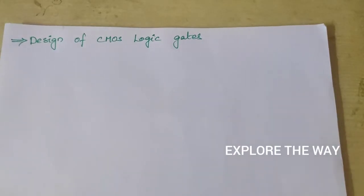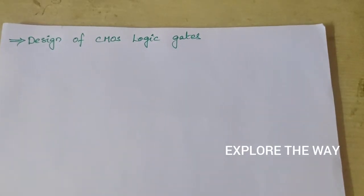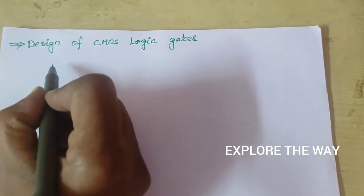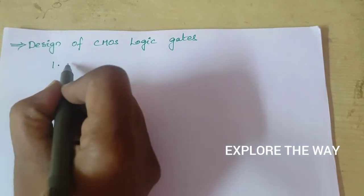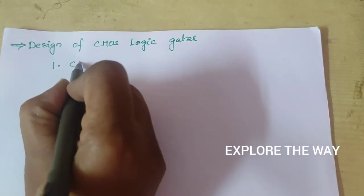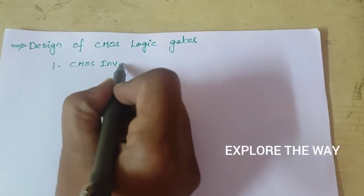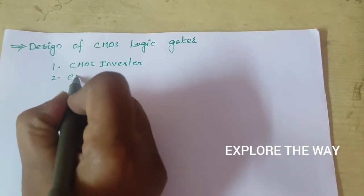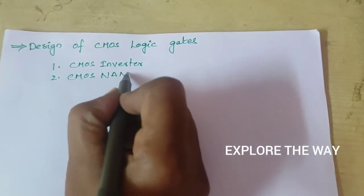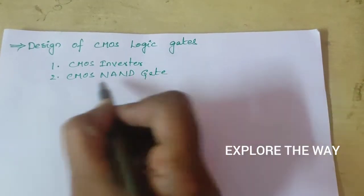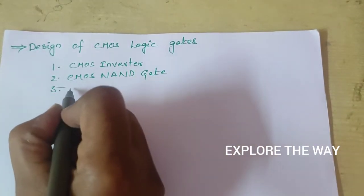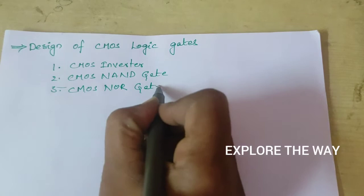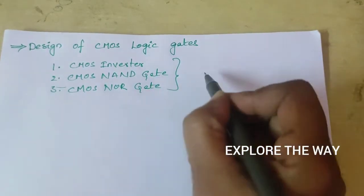In this video I am going to explain how to draw CMOS logic gates. There are three inverting gates: the first one is the CMOS inverter, the second one is the CMOS NAND gate, and the third one is the CMOS NOR gate. All these gates are called inverting gates.